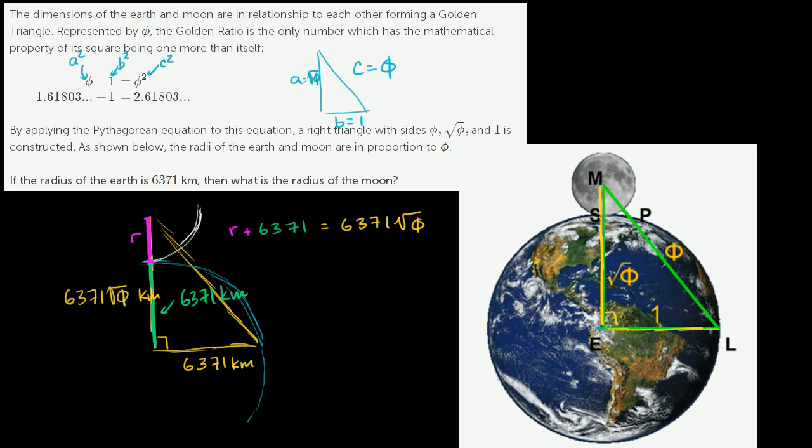Well, now we just have to solve for r. We could subtract 6,371 from both sides. And we get r is equal to 6,371 times the square root of phi minus 6,371. And if we want, we could factor a 6,371 from both of those terms. And we would get r is equal to 6,371 times the square root of phi minus 1. And we are done. And this is still pretty neat and pretty cool.